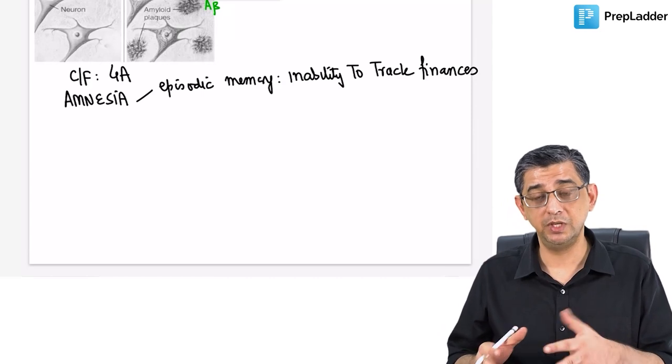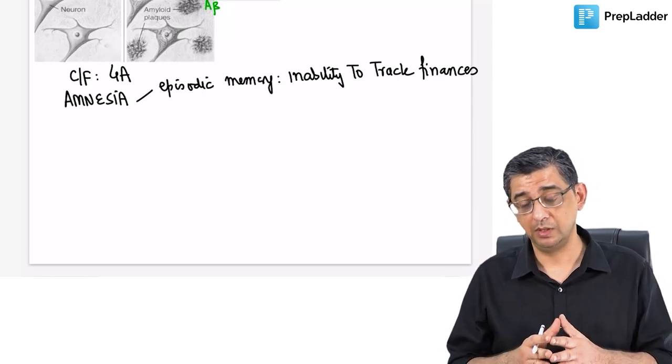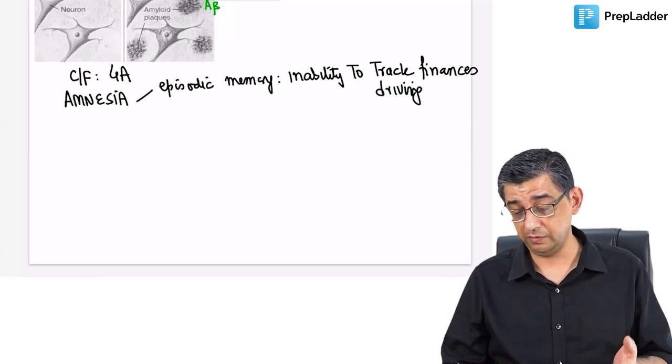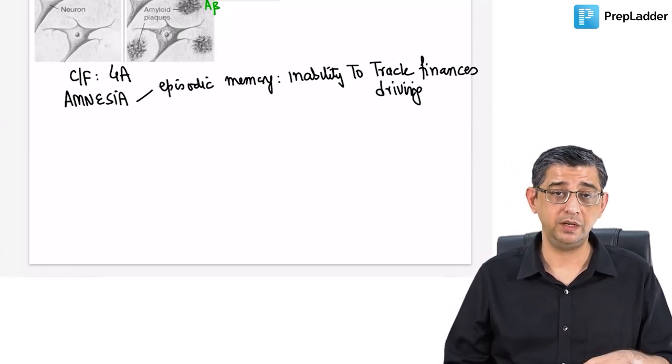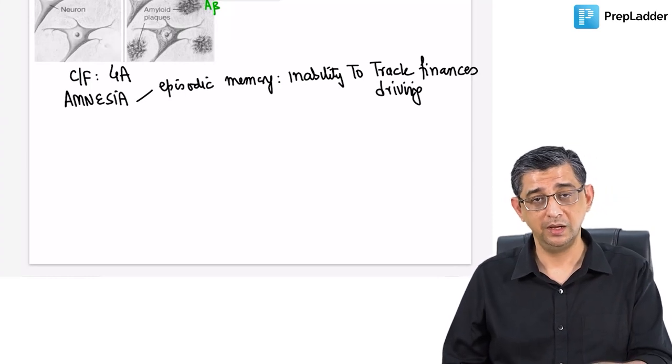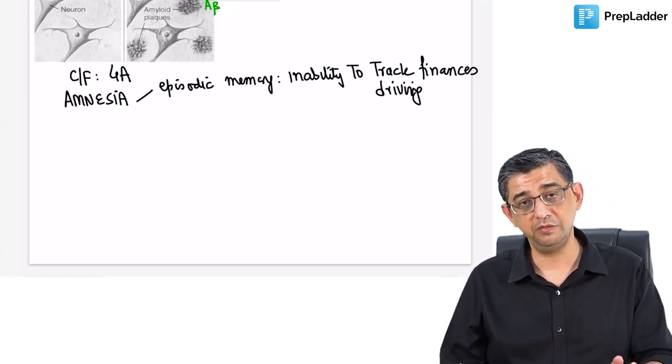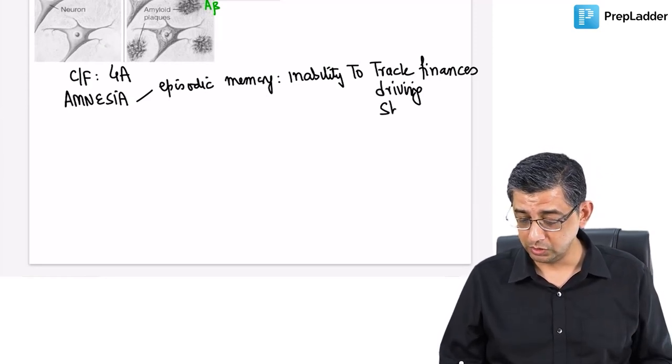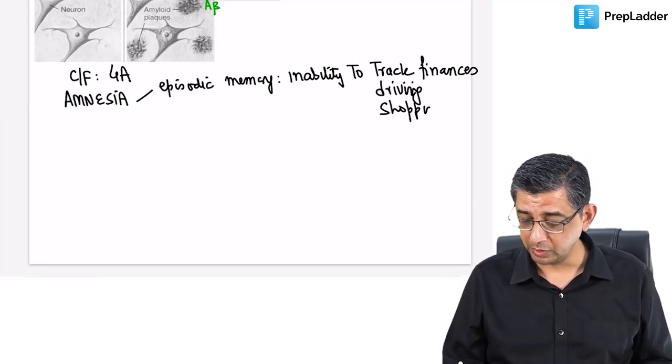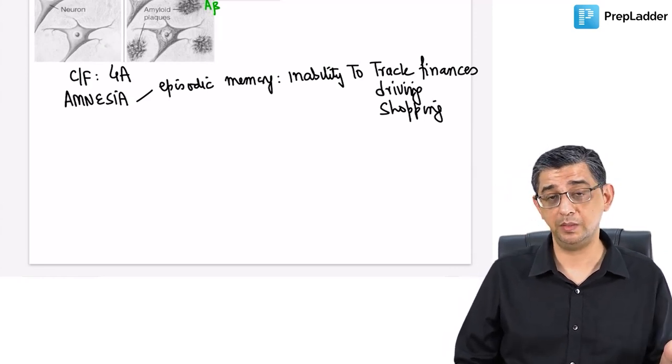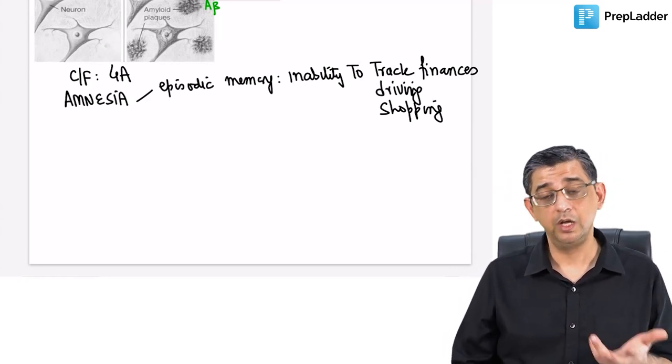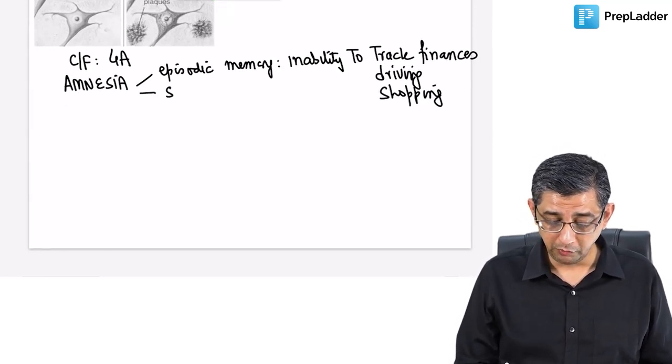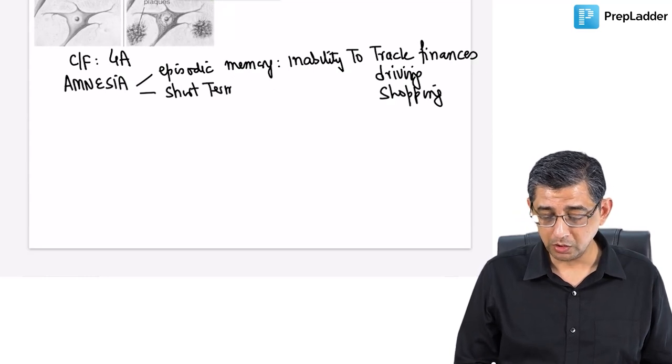The message is inability to track finances, inability to drive. I don't mean he can't press on the accelerator and put on the brakes - he might drive safely but might not be able to get back to his house. All the routine things about which we don't think about, episodic memory facts would be lost.